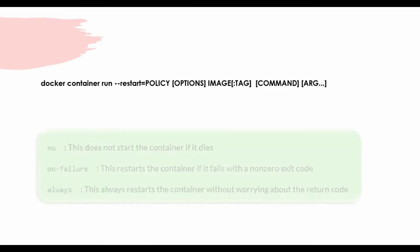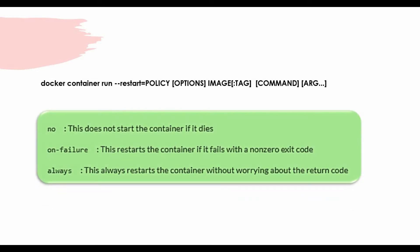Normally there are three policies. One is 'no', which means the container will not restart even if it dies. We can also use 'on-failure', which means the container will restart if it fails with a non-zero exit code. And we can use 'always', which means the container will always restart without worrying about the return code.